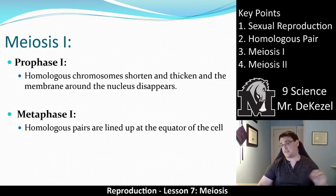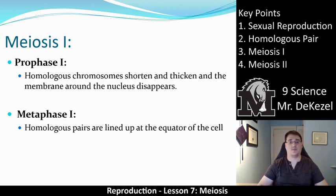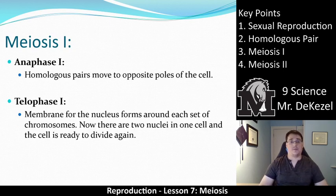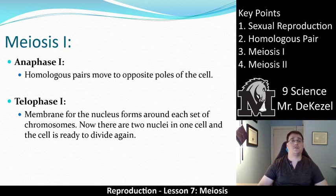Some specific terms: in prophase 1, homologous pairs shorten and thicken, and the membrane around the nucleus disappears, similar to mitosis. The homologous pairs are lined up at the equator of the cell. In anaphase 1, homologous pairs move to opposite poles of the cell — it's the pairs being split, not the chromosomes themselves being torn apart yet. In telophase 1, the nuclear membrane forms around each set of chromosomes, and the cell divides through cytokinesis, giving two cells.